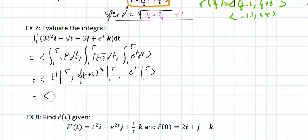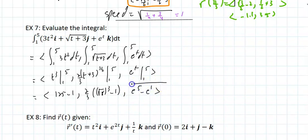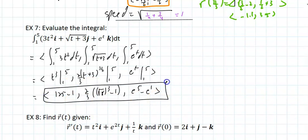Evaluating: t³ from 1 to 5 = 125 − 1 = 124. For the middle component, (2/3)(8)^(3/2) − (2/3)(4)^(3/2) = (2/3)(8√8 − 1). And eᵗ from 1 to 5 = e⁵ − e¹. That's pretty much it — you're done with the definite integral.